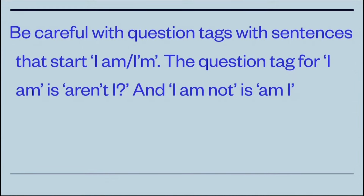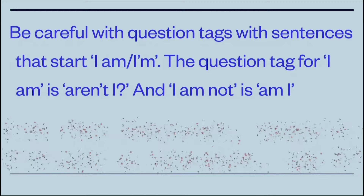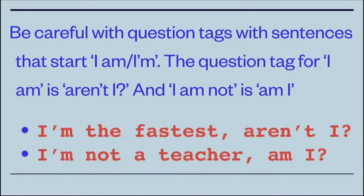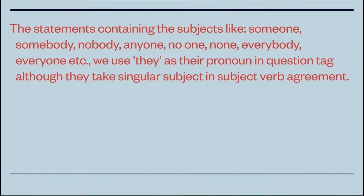Be careful with question tags for sentences with 'I am.' The question tag for 'I am' is 'aren't I,' and for 'I am not' it is 'am I.' For example, 'I am the fastest' — the tag is 'aren't I,' not 'am I.' And 'I am not a teacher' is a negative sentence, so when making the question tag it becomes 'am I.'